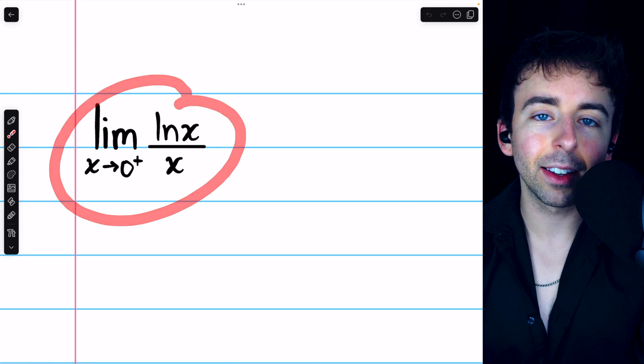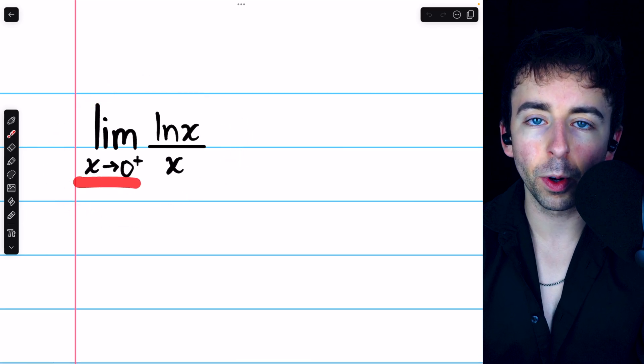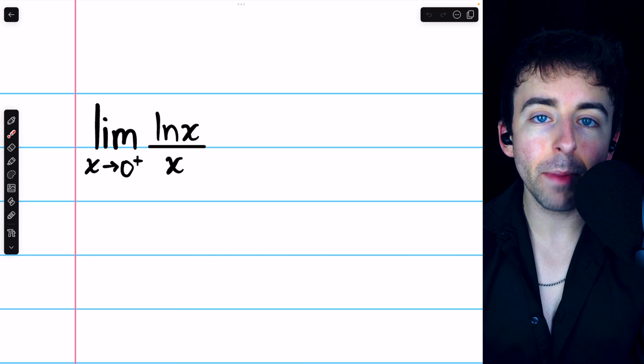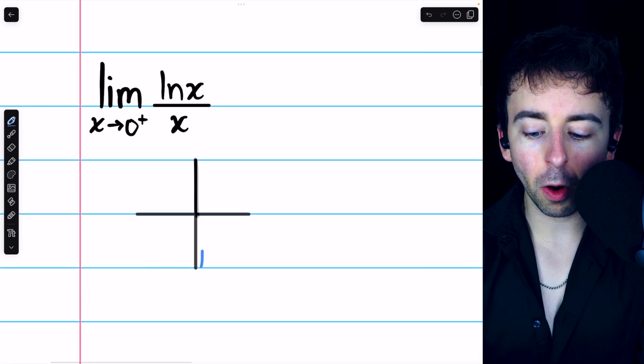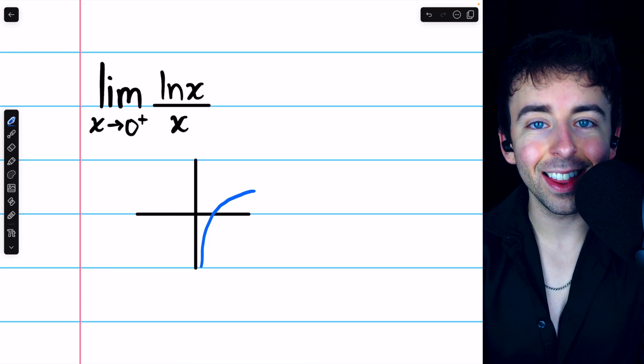To evaluate the limit of ln x divided by x as x approaches 0 from the right, it may help to recall the graph of the natural log function. The graph roughly looks like this.